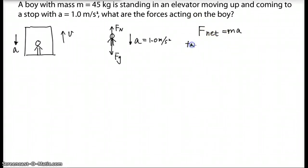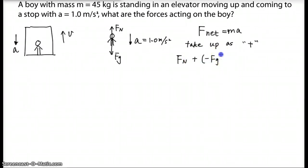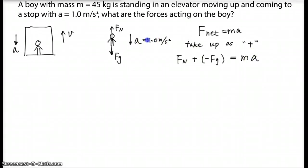If we take up as positive, then Fn is positive. Then Fn plus Fg — which is negative — equals Ma. Now be careful: the acceleration is going down, so we should give A a value of negative 1.